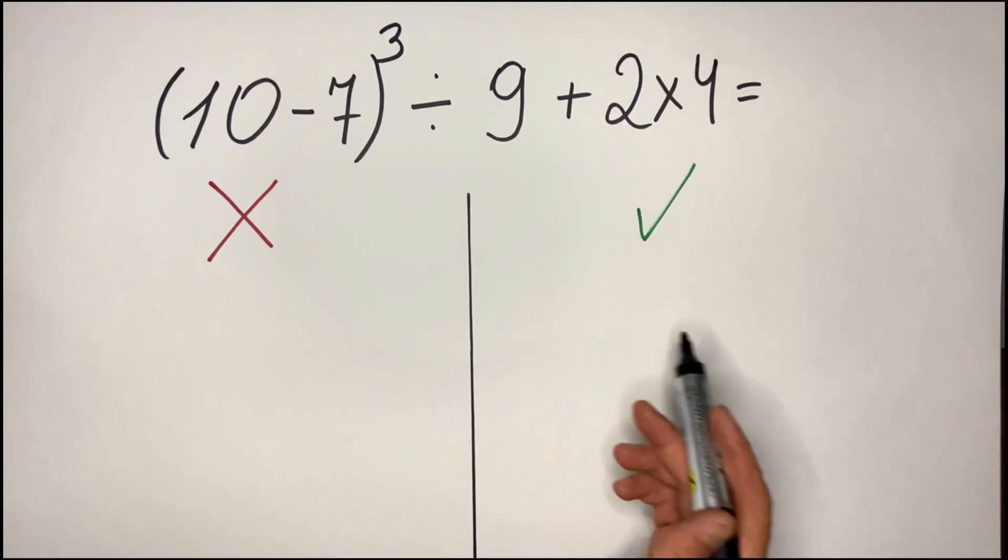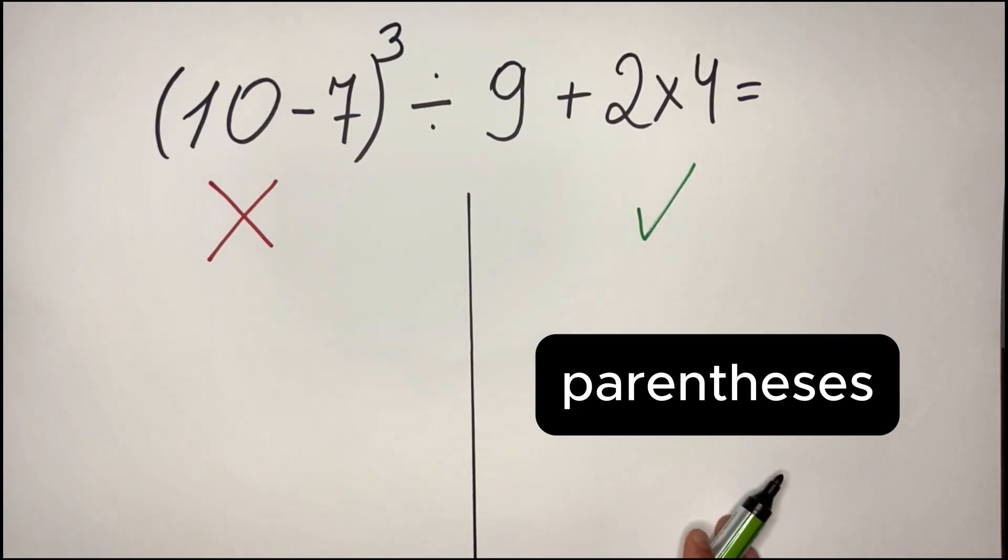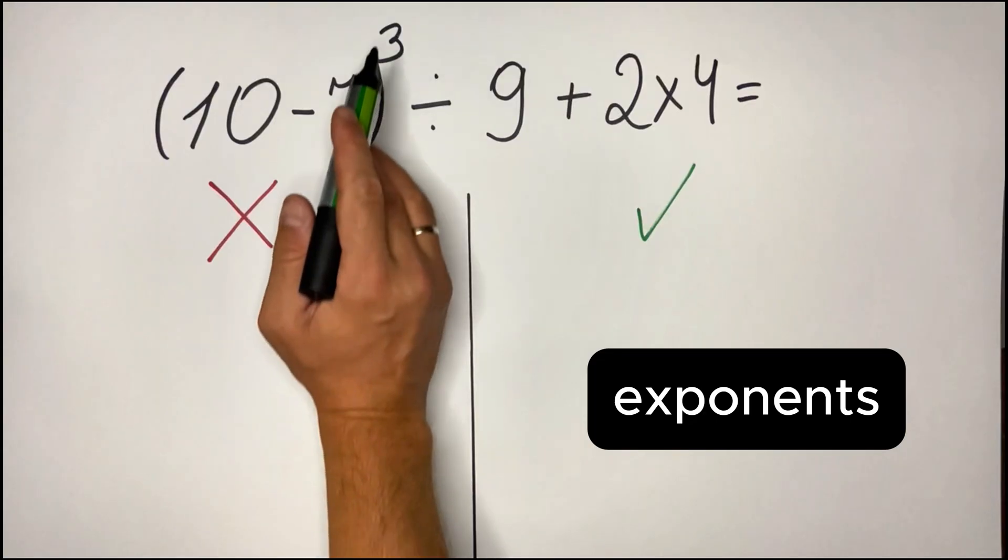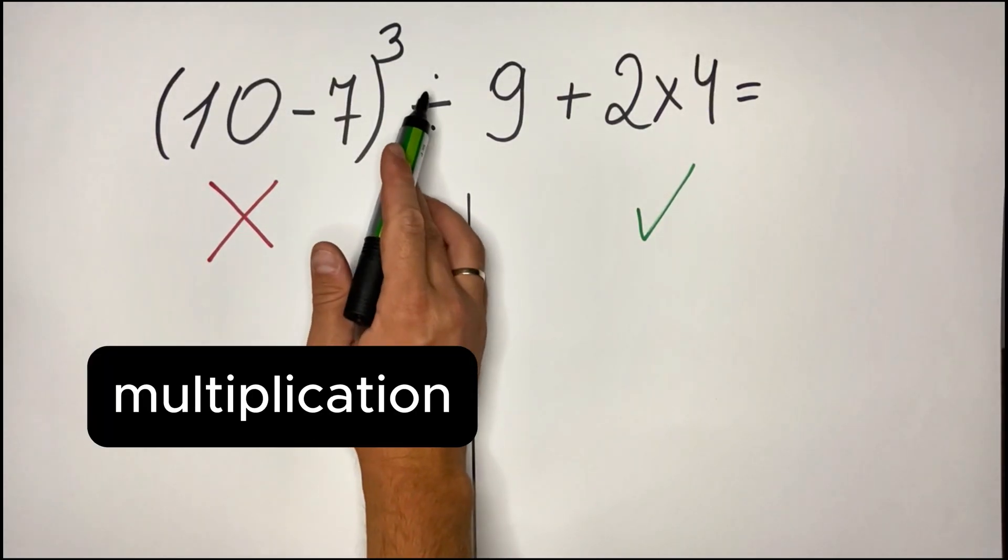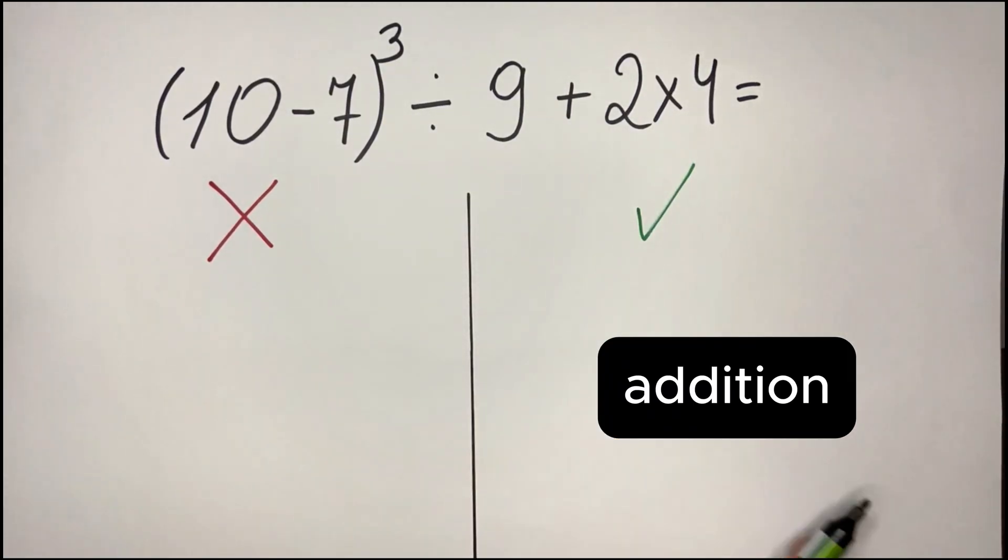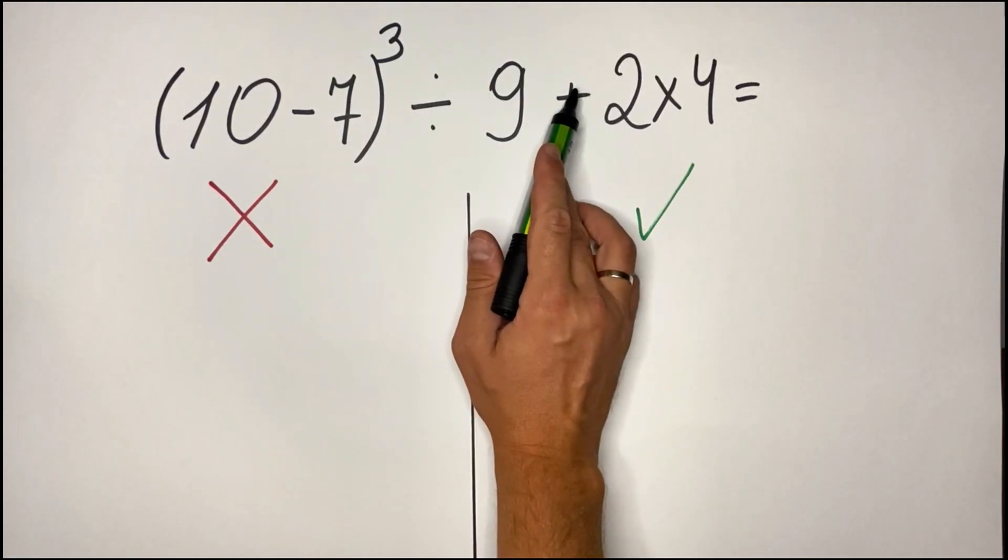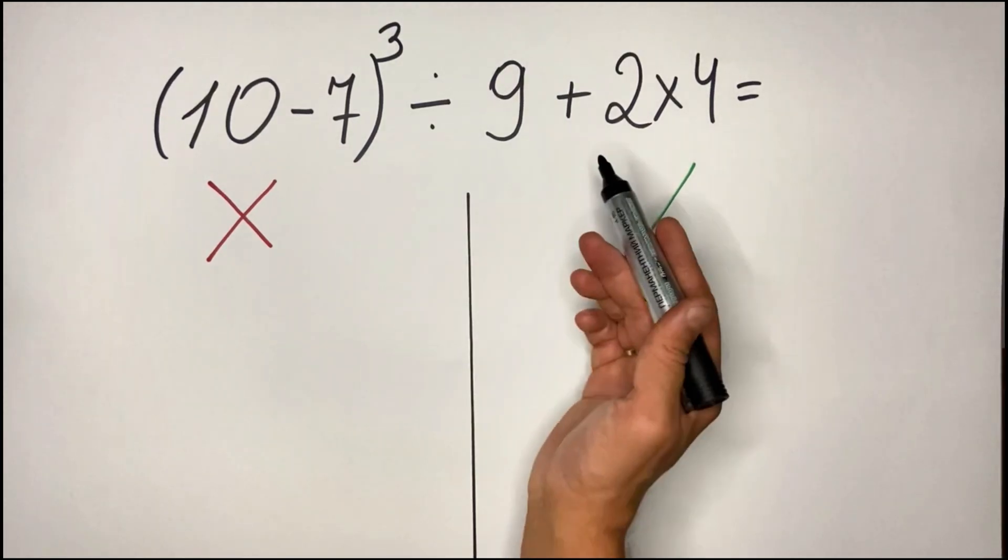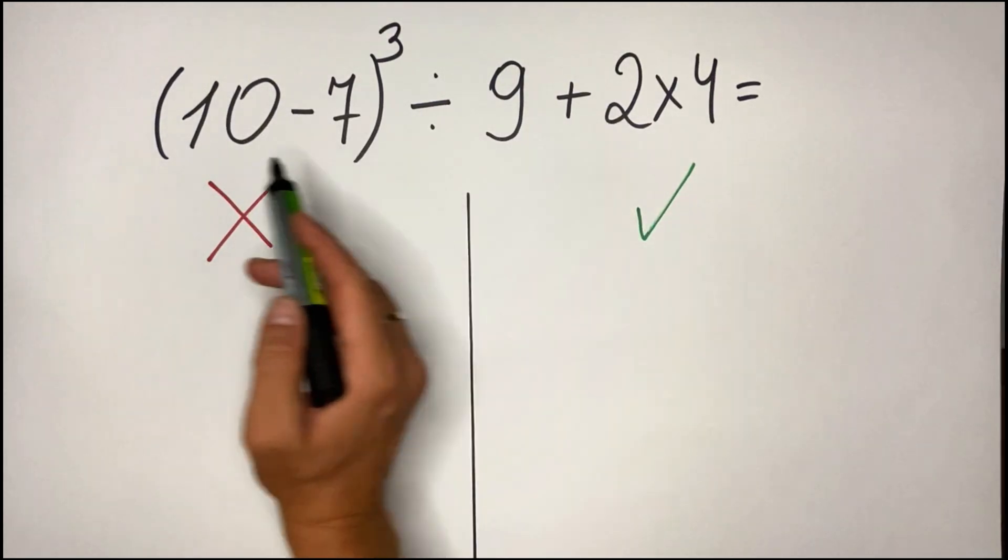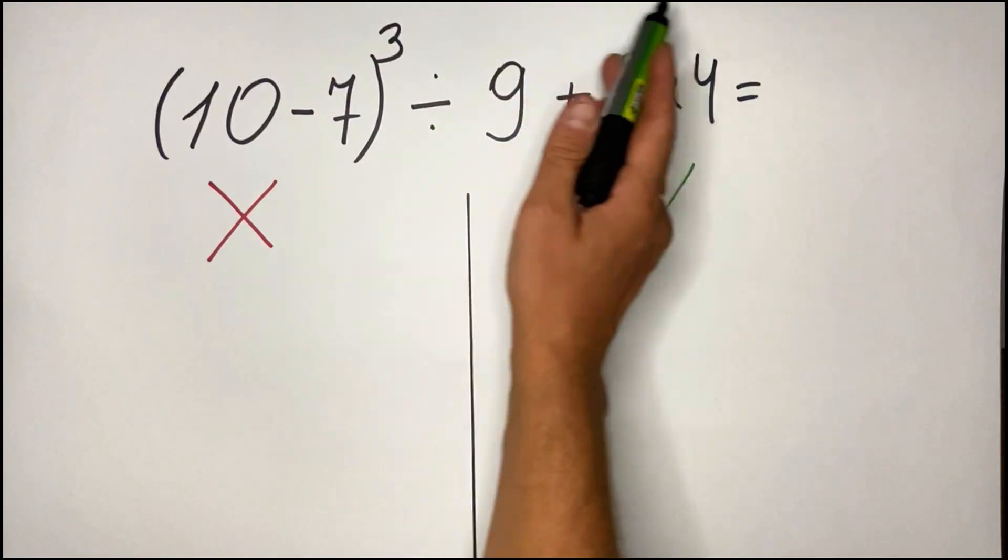So as you know, PEMDAS stands for first you do the parenthesis, then you do the exponents, then you do the division and multiplication, then you do the subtraction or addition. And of course, once you follow the order, everything should go from left to right.